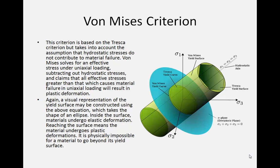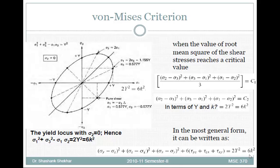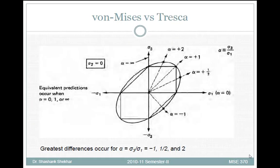For von Mises, you can see a visual representation of the yield surface. Inside the surface the material undergoes elastic deformation; reaching the surface means the material undergoes plastic deformation. The von Mises criterion is expressed as: (σ₂ − σ₃)² + (σ₃ − σ₁)² + (σ₁ − σ₂)² = C₂, and in terms of Y and K, Y = √3·K.